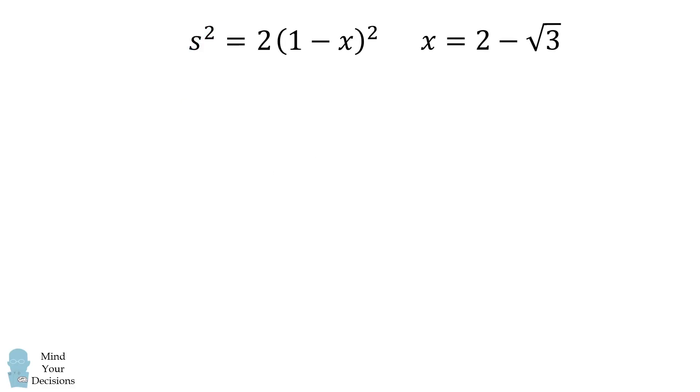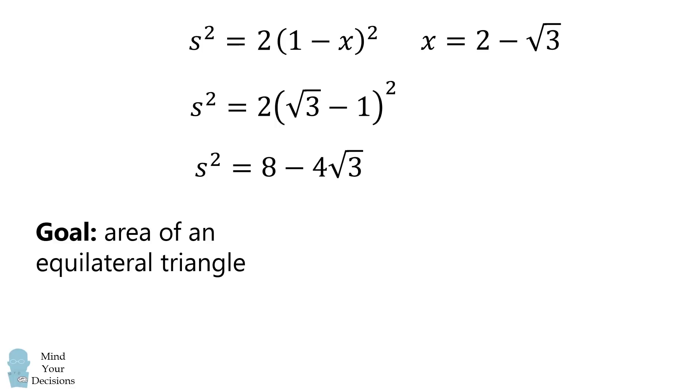Once we have the value of x, we can go ahead and solve for s squared, and then remember, we're trying to solve for the area of the equilateral triangle, which is equal to s squared root 3 all over 4. We simplify this, and we get 2 root 3 minus 3, which is approximately 0.464. And that's our answer.